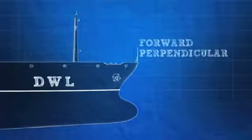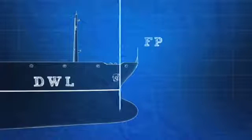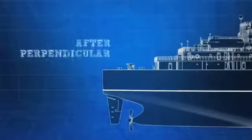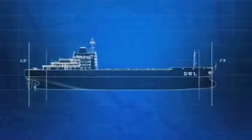The forward perpendicular, or FP, is a vertical line drawn at the intersection of the design waterline and the foreside of the stem of the hull. The after perpendicular, or AP, is a vertical line drawn at the intersection of the design waterline and the aftmost point of a ship's hull. For most commercial vessels, this is generally where the rudder post is located.